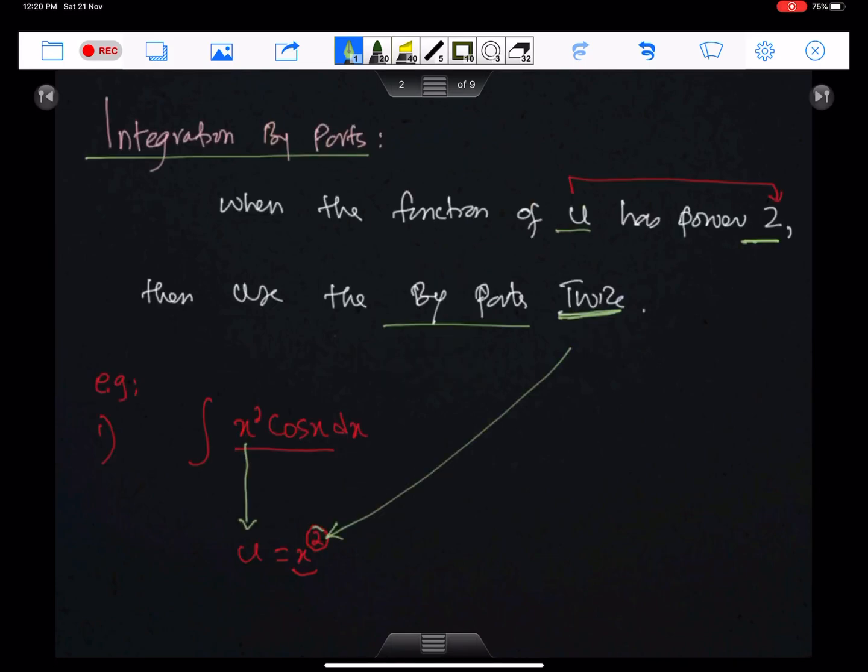Integration by-parts. When the function of u has power 2, then use the by-parts twice. Like in this example, this function u has power 2. Therefore, use the by-parts twice.